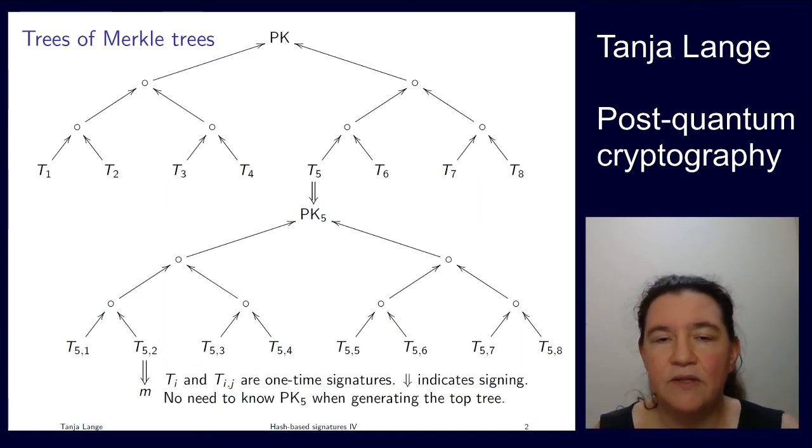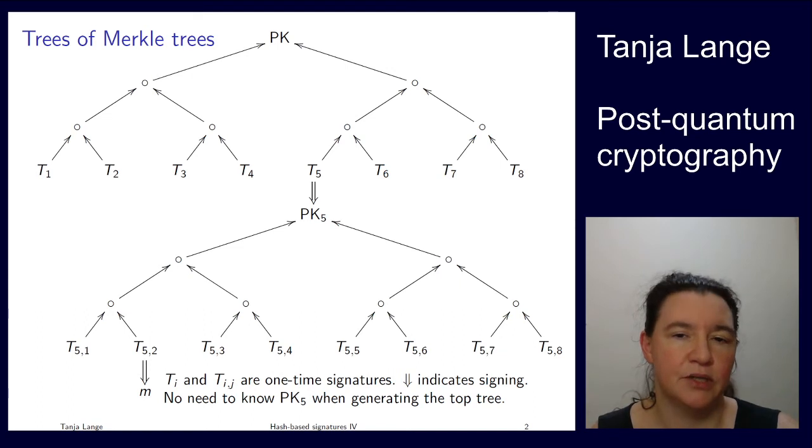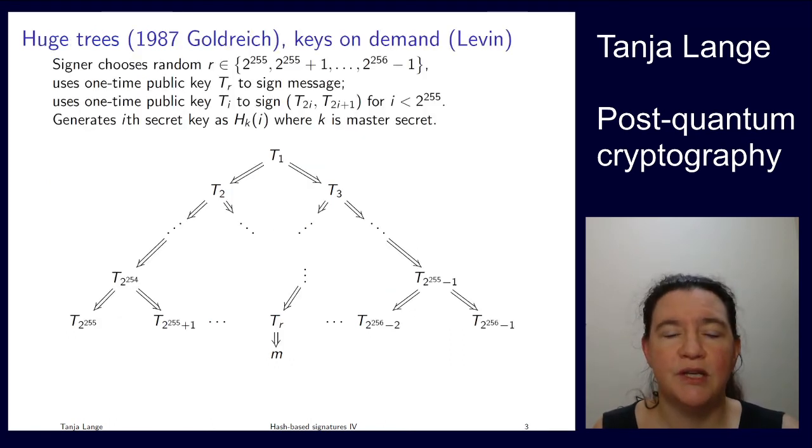You can think of these trees now being shrunk to just the one-time signatures. So no hashing at all, just one-time signatures next to each other, but lots of them. So here's a picture, again using double downward arrows to indicate signing. There's no single upward arrows indicating hashing. And this is a truly huge tree.